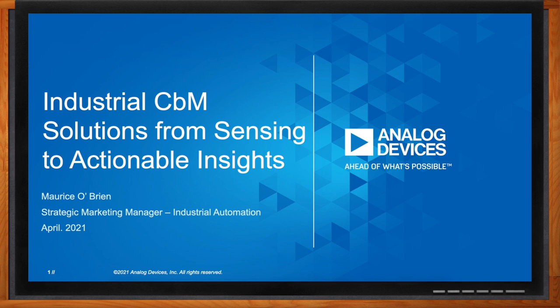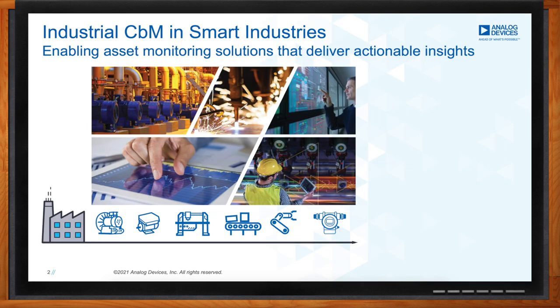Industrial CBM is nothing new — it's been around for quite a long period of time. But what's different is the broadening of the scope of condition-based monitoring applications. Traditionally, condition monitoring was applied on the most critical assets, or what I would call the 5% — assets in a manufacturing facility that if they failed, everything would stop. Examples would be power generation, a compressor, pumps for water or fuel. But now people are seeing the value of CBM and want to deploy it on the other 95% of assets. That's really what's driving the growth.